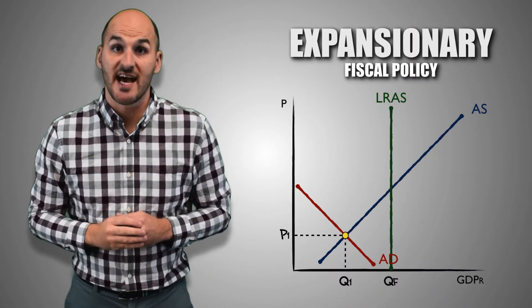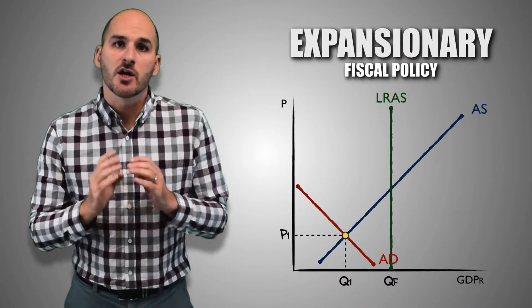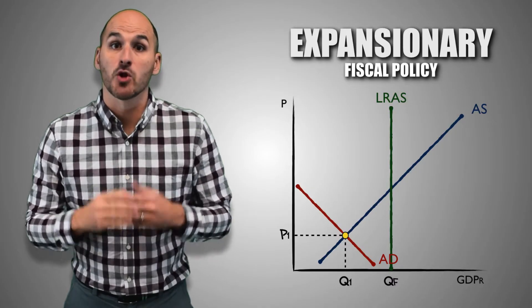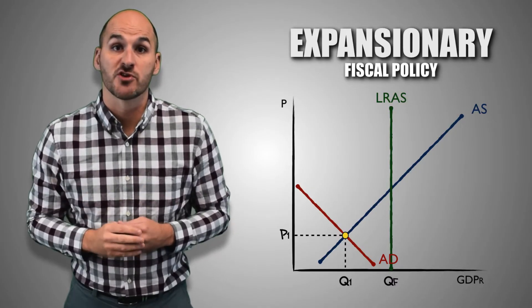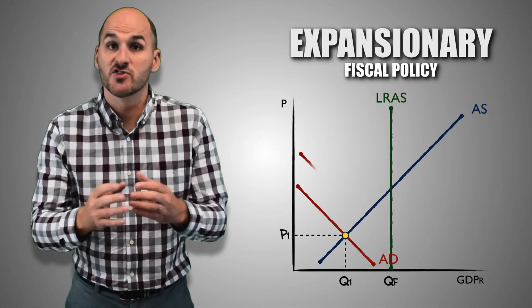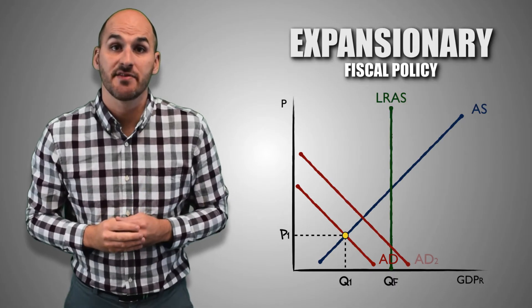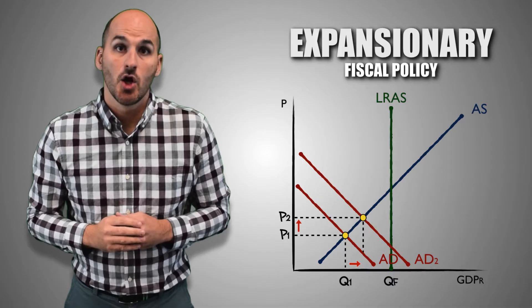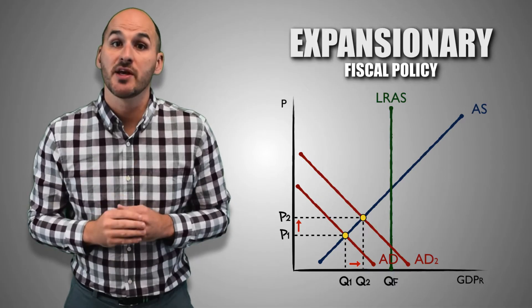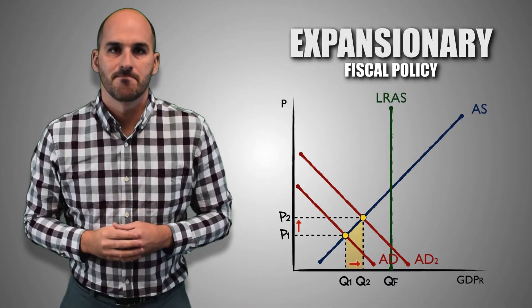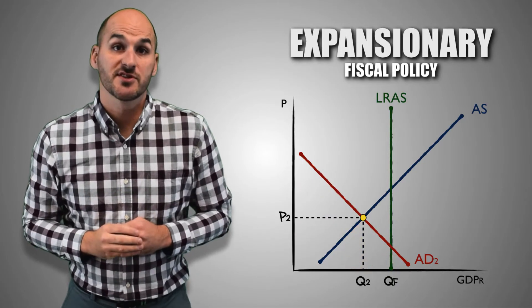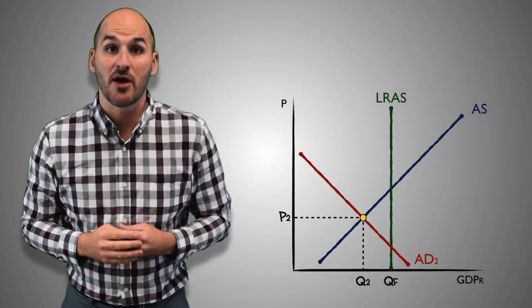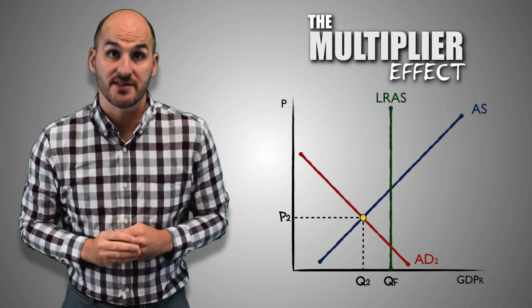When government decreases personal taxes, government is trying to jumpstart consumer spending by allowing consumers to keep a larger portion of their disposable income. When consumers use their tax savings to purchase goods and services, it will increase aggregate demand, which causes a degree of short-run economic growth. However, even after this growth, the effects of the policy continue to ripple throughout the economy through the multiplier effect.